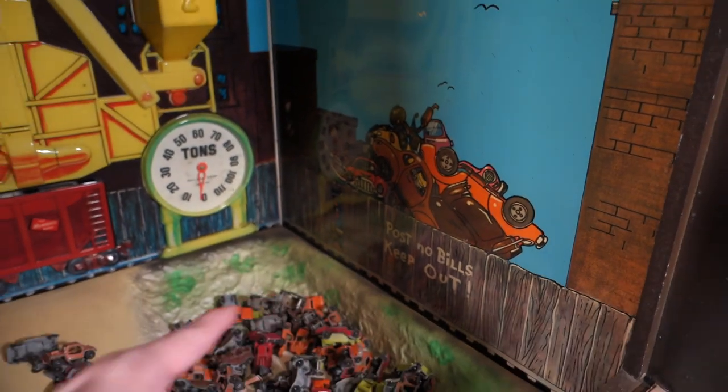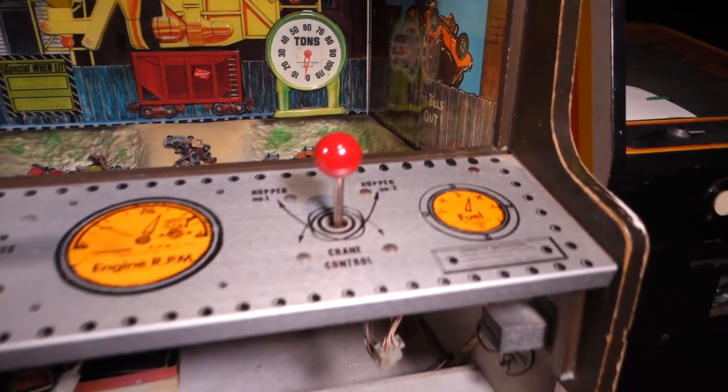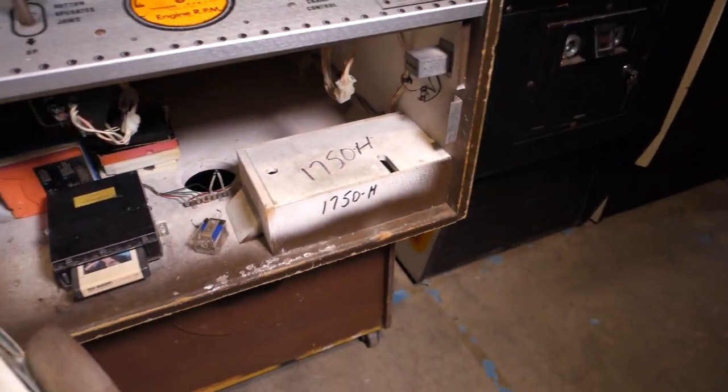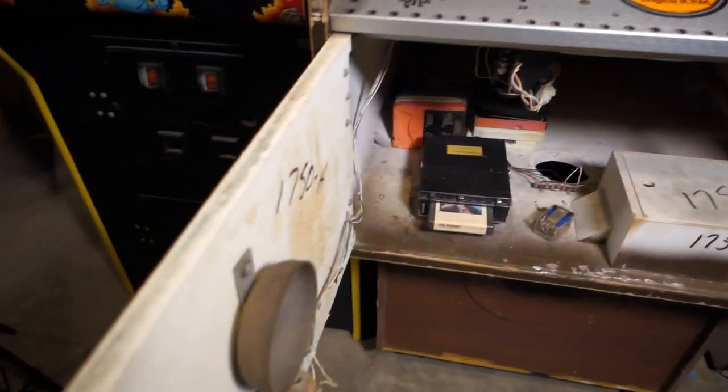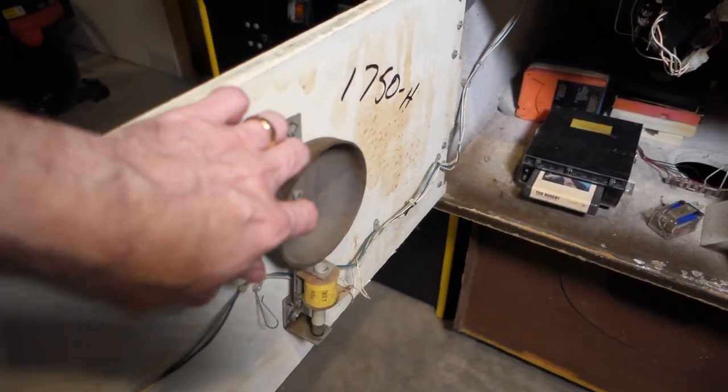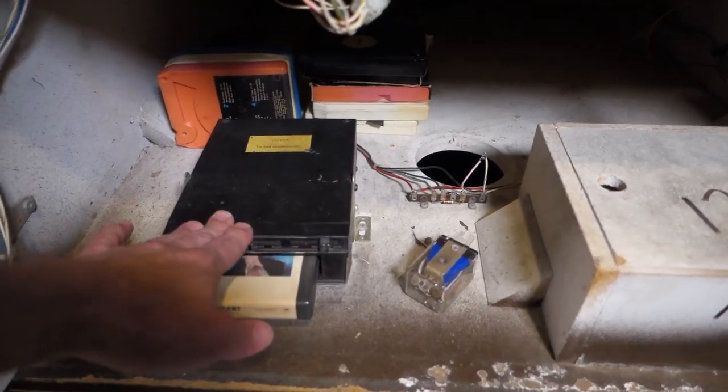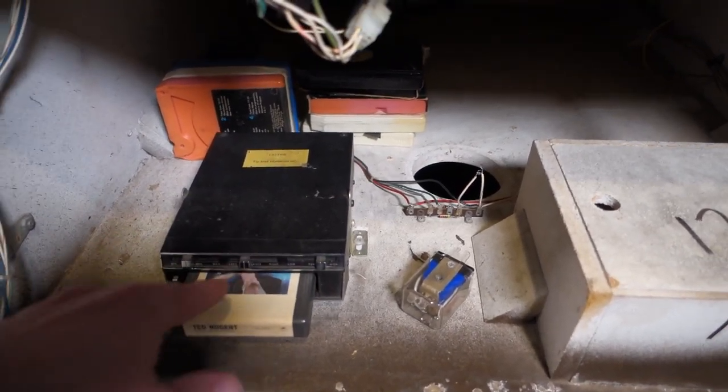The artwork's really fun on that. Got a broken hydraulic gauge here, post no bills, keep out. So it's really cool. Another thing that's neat on the inside here, which I've never seen the inside of one of these, is on the door we've got the coin mech and a bell.